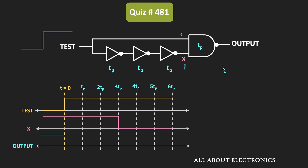Before time t=0, this output remains high. Now at t=0, the test signal becomes high. At that time, the x signal is already high. So both inputs of the NAND gate are high, and therefore its output will become low. Since the NAND gate responds after one propagation delay, the output will become low after 1 gate delay.